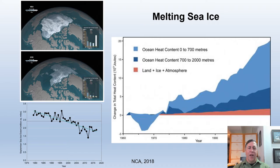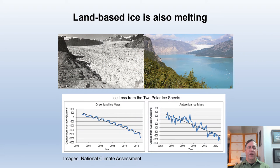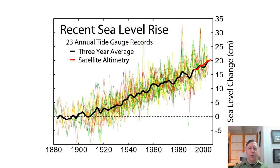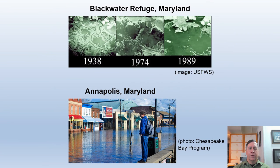Arctic sea ice has decreased, on average, between 3.5 and 4.1 percent per decade since the early 1980s. In September, when ice coverage reaches its annual minimum, the extent has decreased 10.7 to 15.9 percent per decade. Arctic sea ice loss is expected to continue, very likely resulting in nearly ice-free late summers by the 2040s. Glaciers and ice sheets are also melting rapidly, and ice melting is accelerating. Seasonally frozen ground is also decreasing.